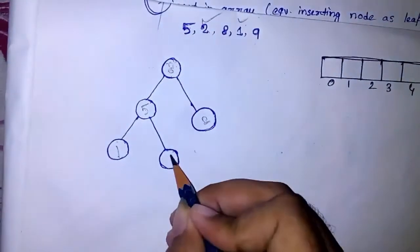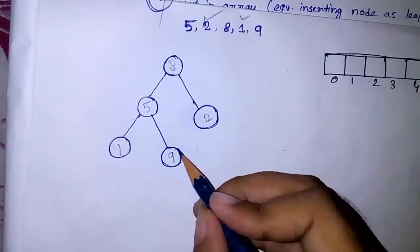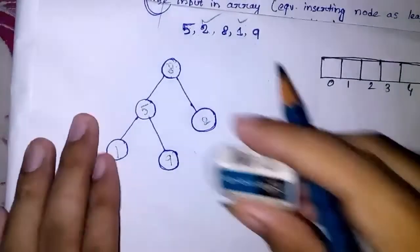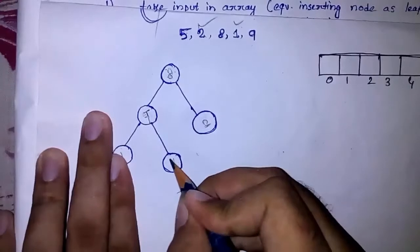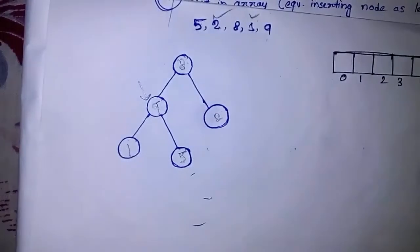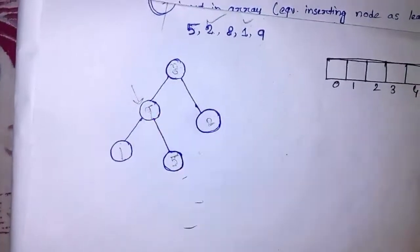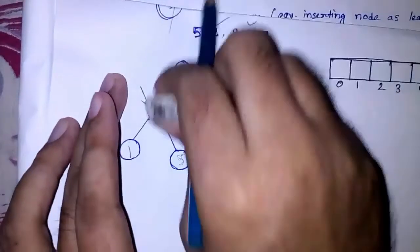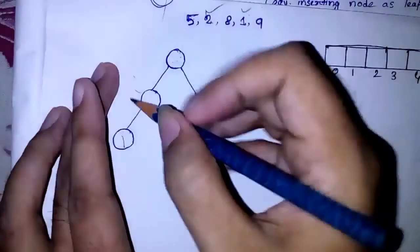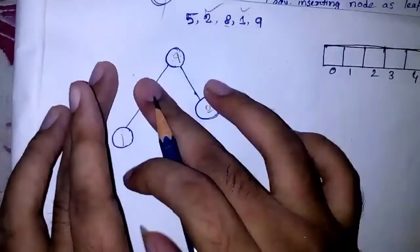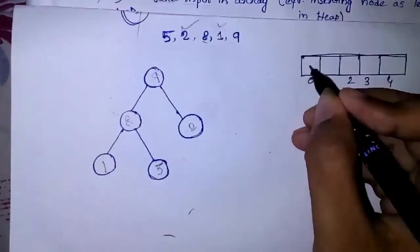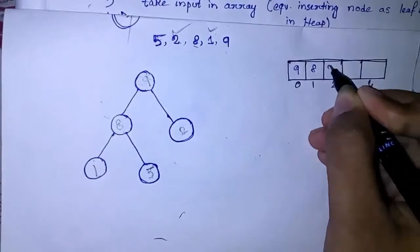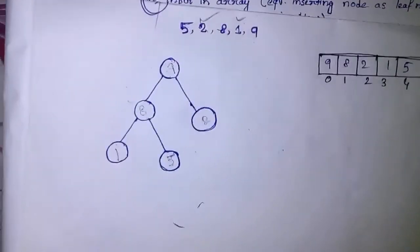Then I insert nine and compare its value with the parent node. The heap property is not satisfied, so I interchange the value. The pointer moves up and I check again with its parent — another swap is required. After doing the heapify, the array will look like this: nine, eight, two, one, and five. The first part — building the heap — is completed.